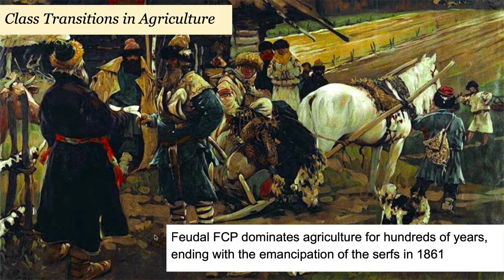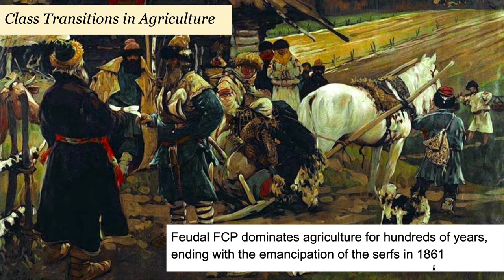This feudal structure dominates agriculture in Russia for hundreds of years, but it ends with the emancipation of the serfs in 1861 — right around the same time that slavery is being abolished in the United States. This eliminates the corvée system. The Russian version was so brutal it's even debatable whether it was actually slavery or feudalism, since the serfs could actually be transferred to others. This class process ends in 1861, ushering in a new class transition.